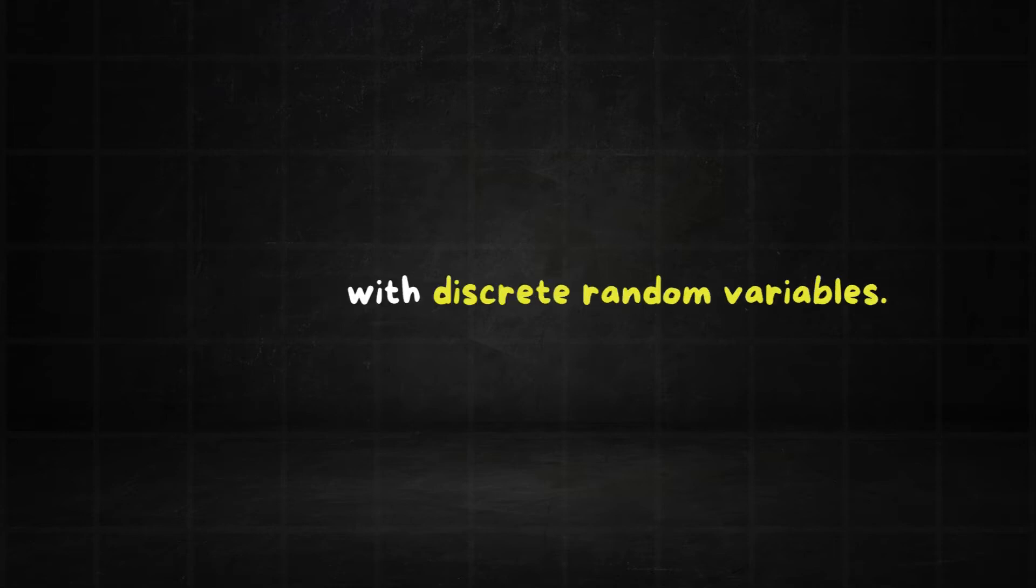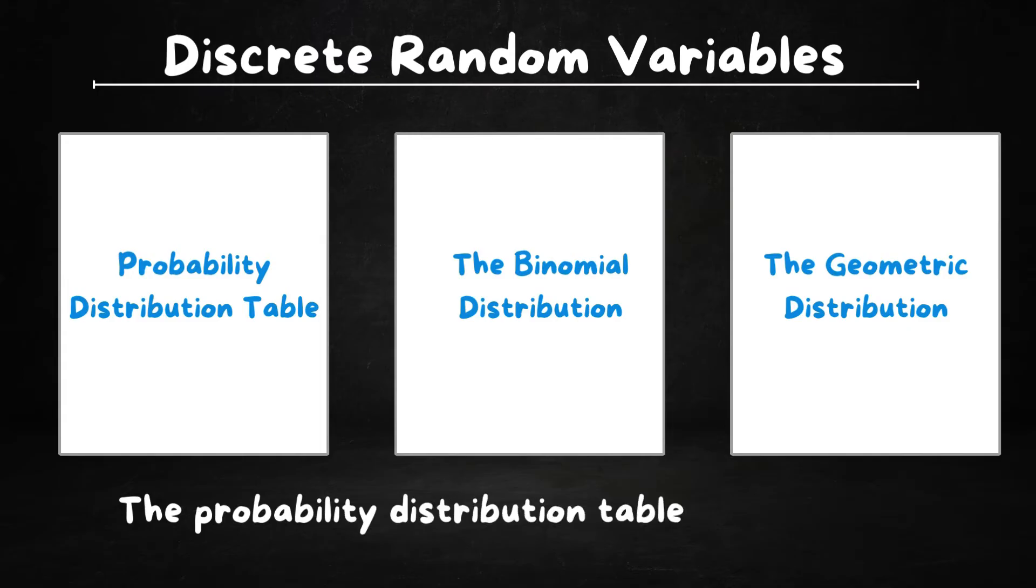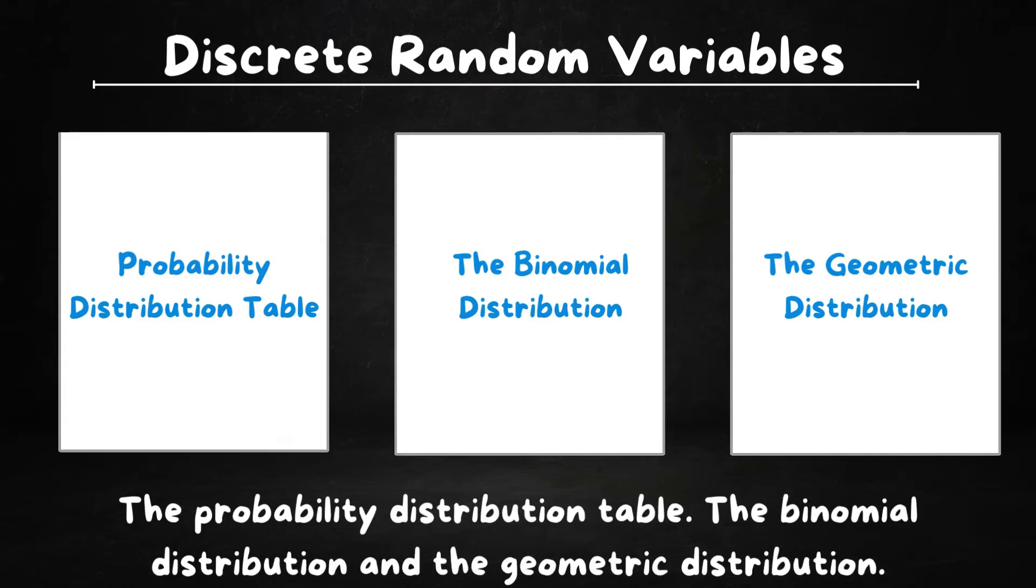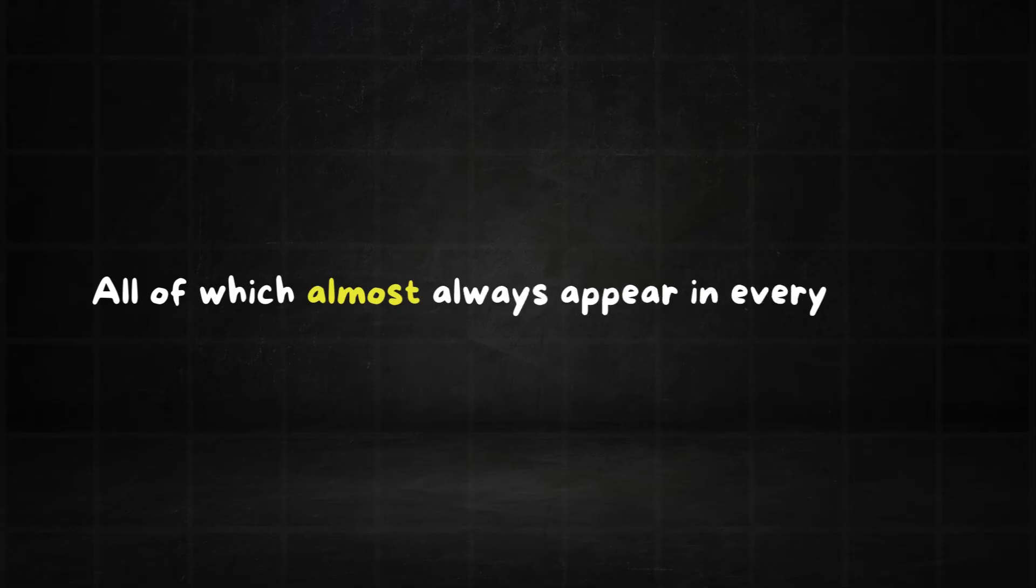Let's start with discrete. It consists of three subtopics. It's the probability distribution table, the binomial distribution, and the geometric distribution. All of which almost always appear in every paper. Hence the 11 mark floor for discrete random variables.